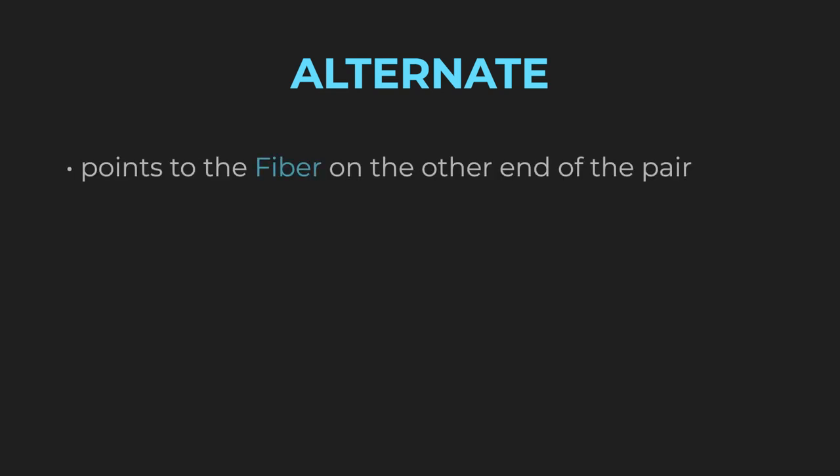In terms of the fiber object, there are many properties we haven't talked about, but they aren't necessary to understand fibers. However, there is one interesting property left: the alternate property. There are two fiber trees — the current tree and the work in progress tree — so there are going to be a lot of fiber pairs. The alternate property points to the fiber on the other end of the pair. This is very important because fibers are very often reused, and this is possible because of the alternate property.